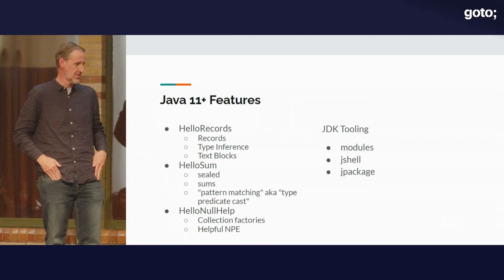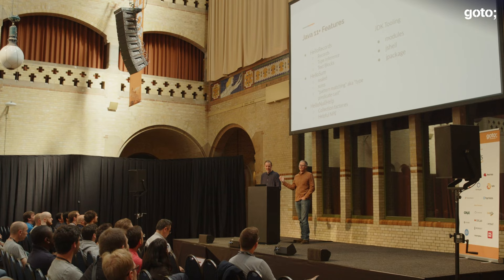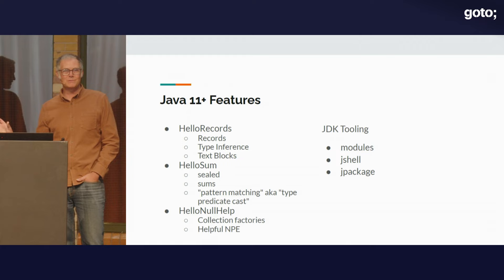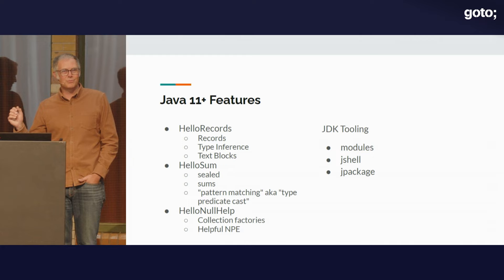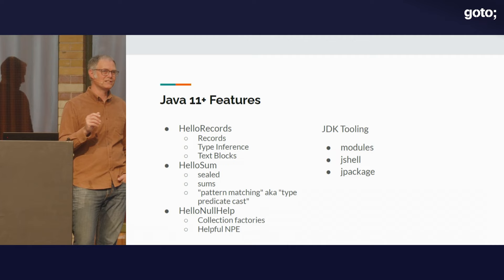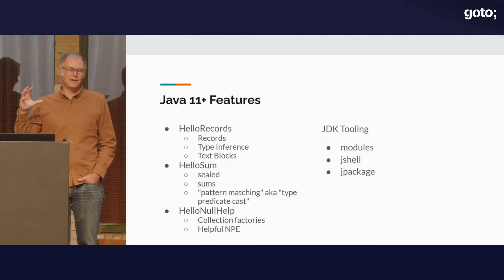What Ryan was describing was a sum type. There are primarily two different types of algebraic data types: the sum type and the product type. They use those algebraic words, and if you're into math you can start to see associations with why they're called product types and sum types. We're going to start with product types, which you'll probably recognize because they are pretty commonly used in a number of different languages.